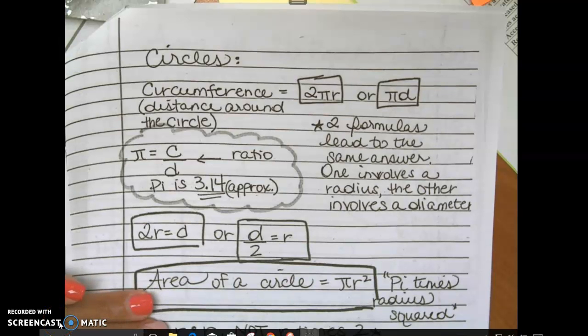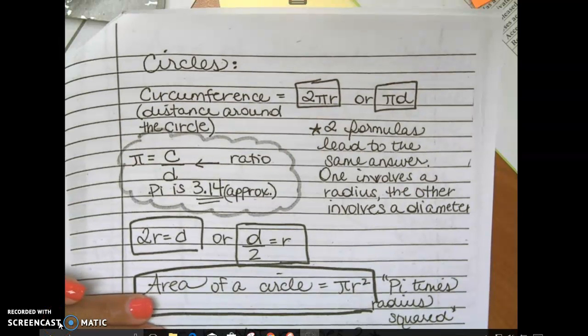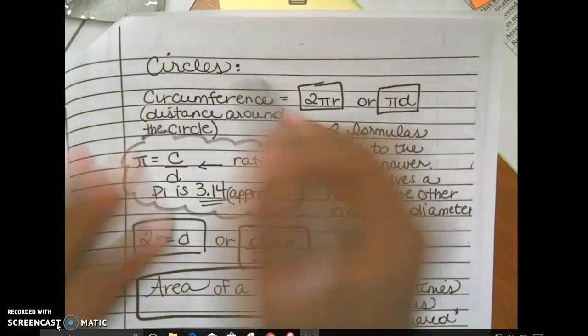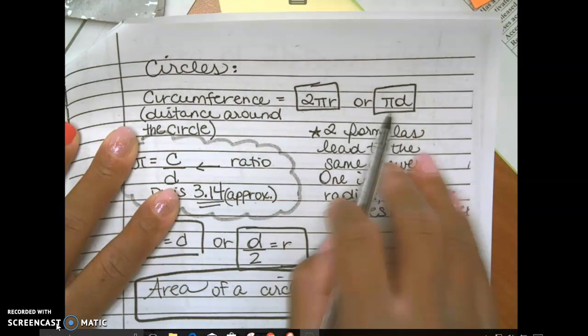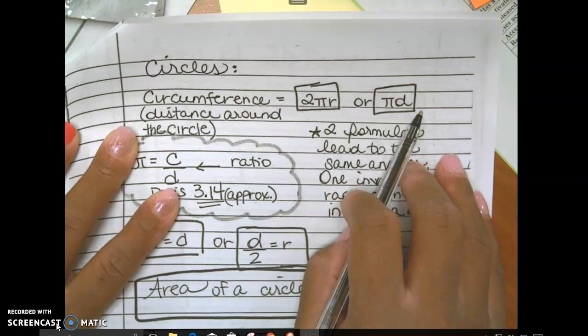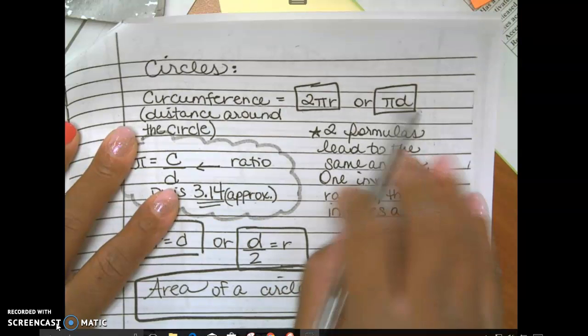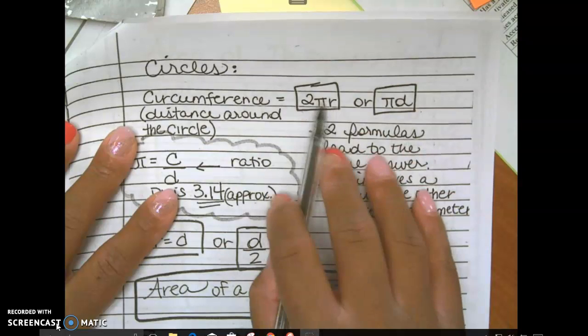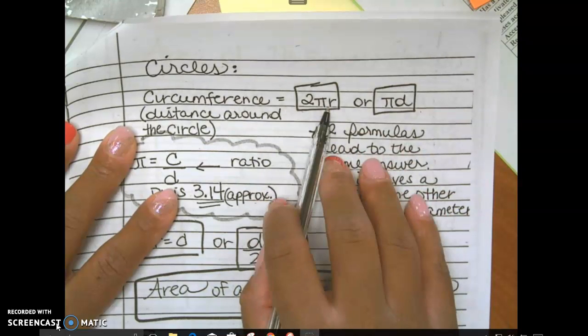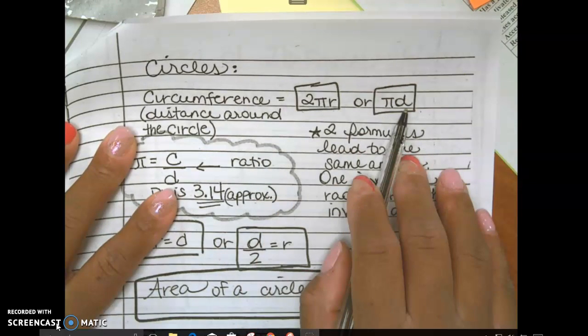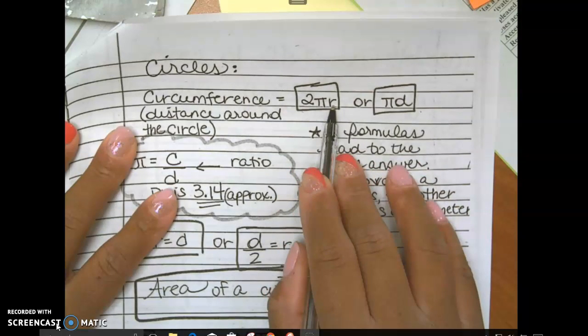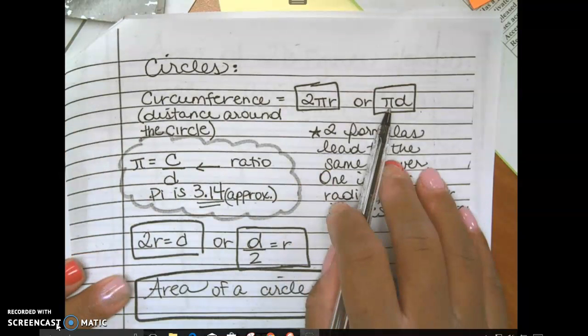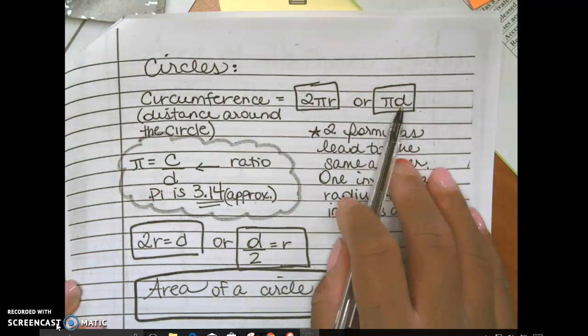Okay, looking at the circle portion of your notes, circumference is 2 times pi times radius or pi times diameter. That is how you say it. Please don't say pi D. Please don't say 2 pi R. This is a multiplication problem. You're multiplying three numbers here: 2, pi, and R, whatever R is. And you're multiplying two numbers here: pi and D.